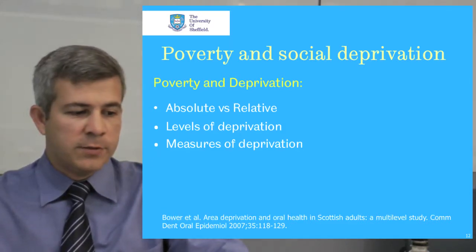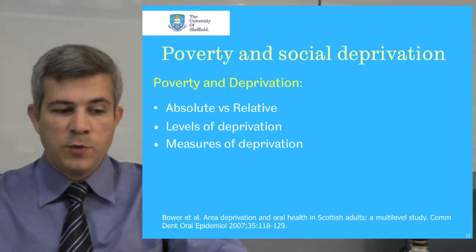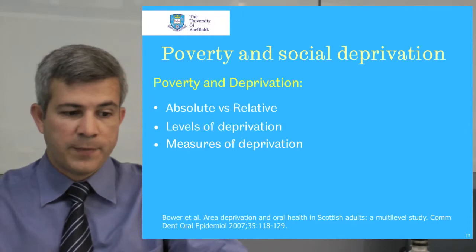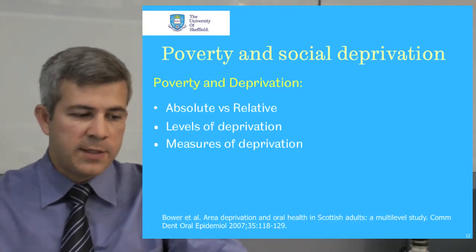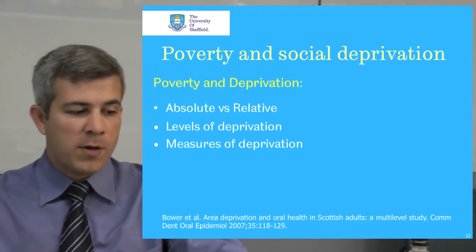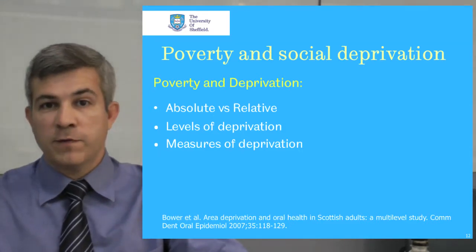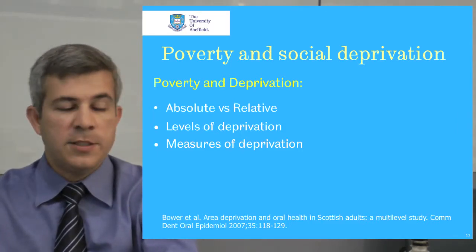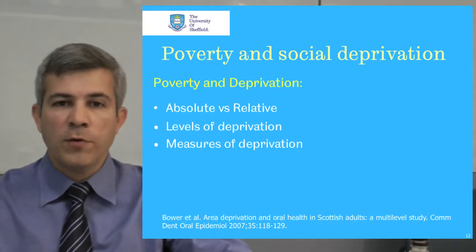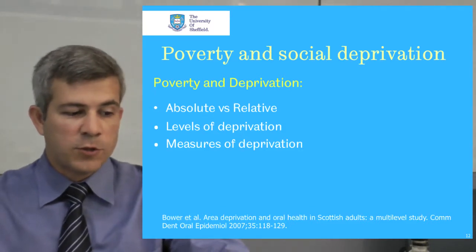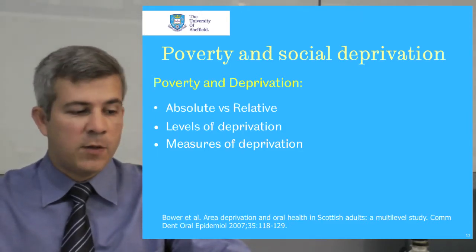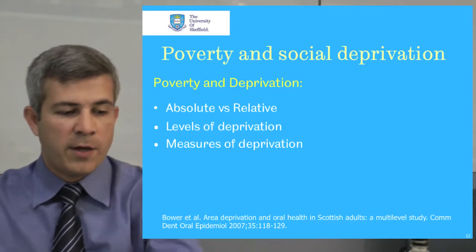Measures of deprivation vary considerably in terms of both the variables used and the level at which they have been constructed. They range from relatively simple single-item asset-based measures such as income, car, and house ownership, to more complex measures incorporating between 4 and 40 variables. They have been applied at individual, household, and area level. The harm to health comes not only from material deprivation but also from the social and psychological problems resulting from living in poverty, which will be discussed further in the next explanation.